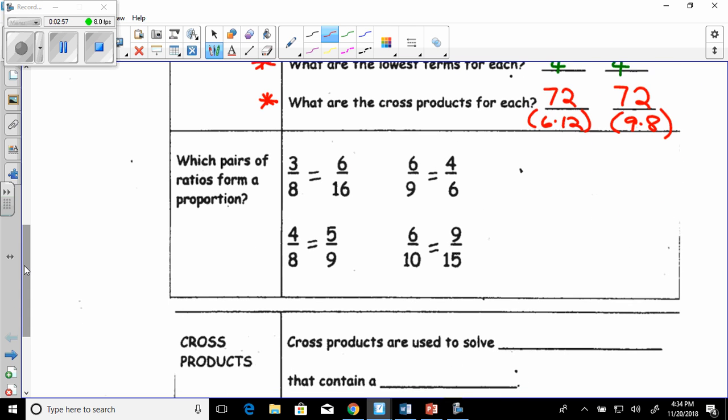So let's look at 3/8 and 6/16. Well, I can do my cross products and multiply 3 times 16, which I get 48. And I'll just write it up here. Then you multiply 6 times 8, which is 48. So what does that tell me? Yes, they are proportional. Let's look at the next one. 6 times 6 is 36. And 4 times 9 is 36. So what does this tell us? Yes, they are proportional.